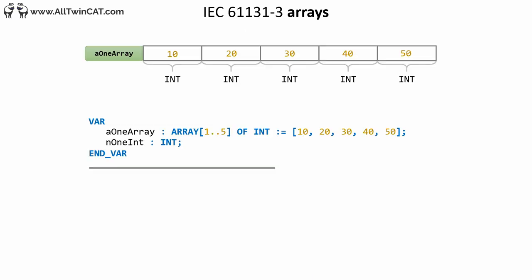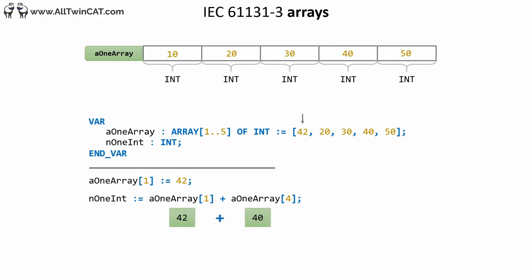In this example we have declared an array with five elements and initialized five values in the declaration. We have also declared an integer called n1Int. We will do some simple calculations on the array and store the result in the integer. First we change the value of the first element so that 10 is changed to 42. Next we assign n1Int the value of the first position in the array plus the value of the fourth position, adding those two values together and storing the result.